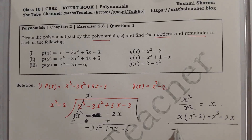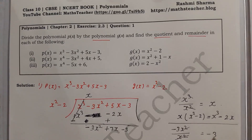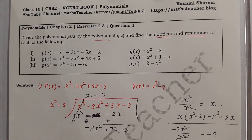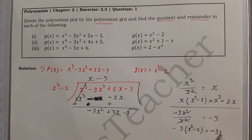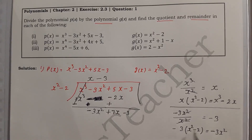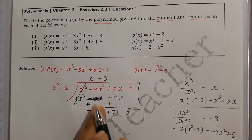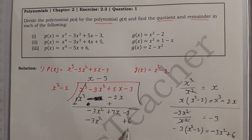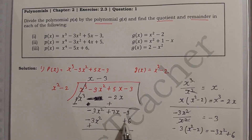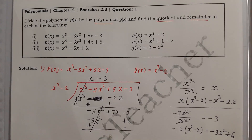Next, we take the first term of the new dividend, minus 3x², divided by the first term of the divisor, x², which gives minus 3. This is the next quotient term. We multiply minus 3 by the divisor x² minus 2: minus 3 times x² is minus 3x², and minus 3 times minus 2 is plus 6. Then we change signs and subtract.